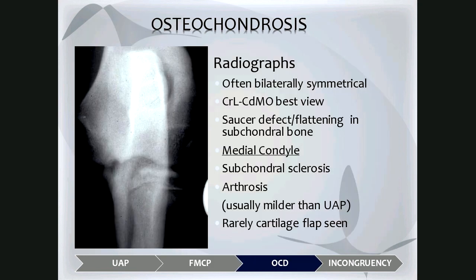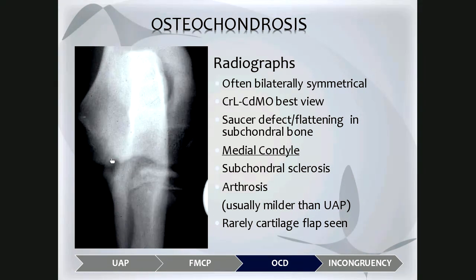The third condition is osteochondrosis, often bilaterally symmetrical. The cranial lateral cordomedial oblique is the best view to define it because it highlights the medial condyle of the humerus. What we see is a saucer-shaped flattening or defect in the subchondral bone of the humerus affecting the medial condyle. Sometimes there's sclerosis adjacent to it, arthrosis may be present, and rarely a cartilage flap can be seen.